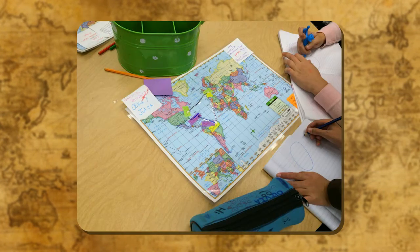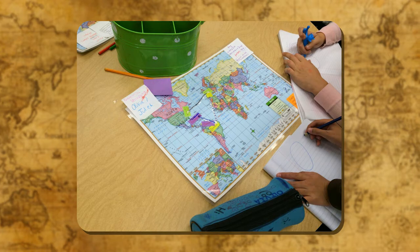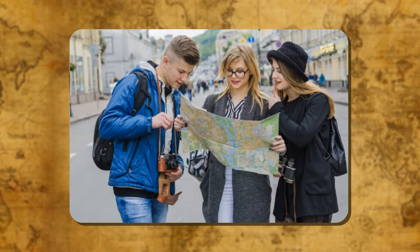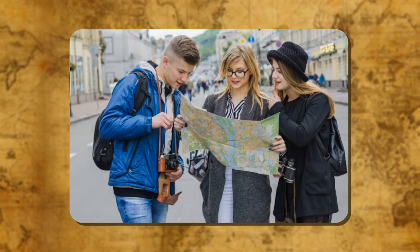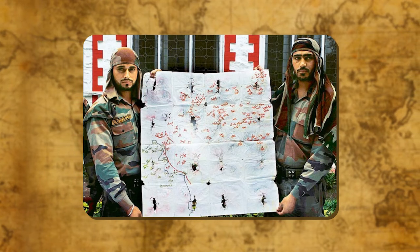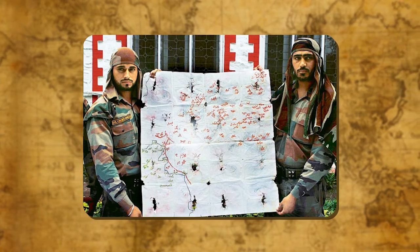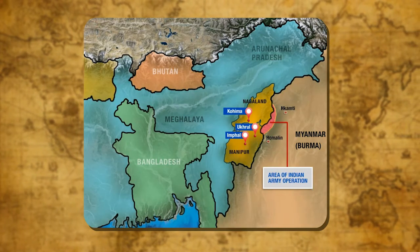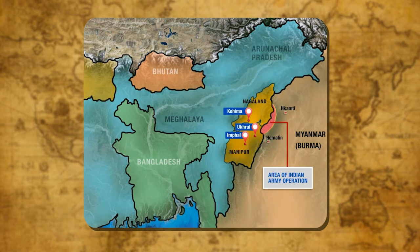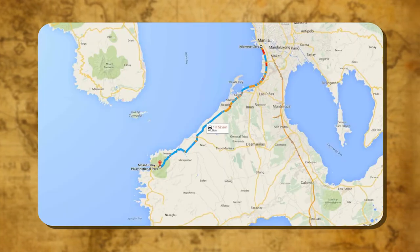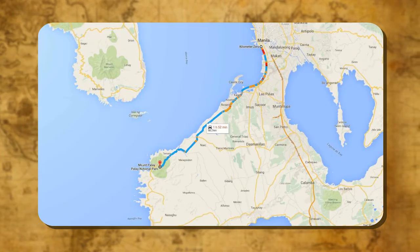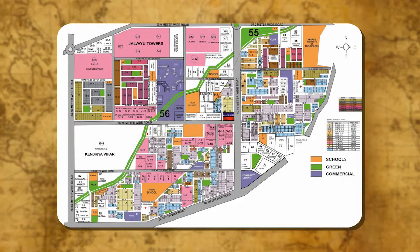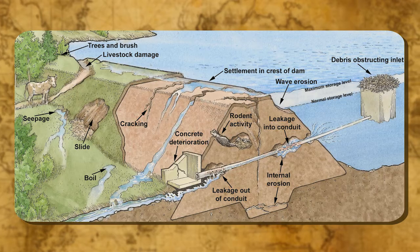Advantages of maps. Maps are useful for students and common people alike. They are very useful to tourists and travellers. They are also used by defence personnel — useful in both planning defence as well as attacks. Maps provide a lot of information to planners also. Planning of roads, housing, colonies, factories and dams are done on the basis of information given on the map.